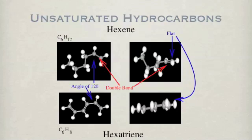Another class of unsaturated hydrocarbons have at least one pair of double-bonded carbon atoms; they are not saturated with hydrogens. The suffix changes from "-ane" for singly bonded hydrocarbons to "-ene" for doubly bonded hydrocarbons. The double bond is also no longer tetrahedral — rather, it is flat. Hexatriene has six carbons ("hex") and three double bonds ("tri-ene"). With each bond being flat, the whole molecule is flat. This will be an important aspect in the formation and structure of the next group, the aromatics.